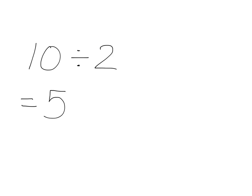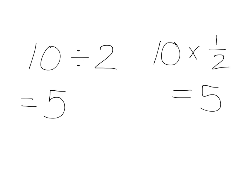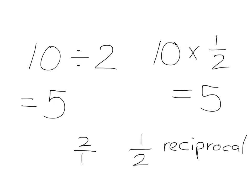Now I want you just to notice something quite interesting here. If I take 10 and I multiply it by a half, I get exactly the same answer. What is the relationship between 2 and a half? Well, 2 we can just write as 2 over 1, and a half is just this upside down. The more technical word for upside down is reciprocal. I just want us to observe that for now.